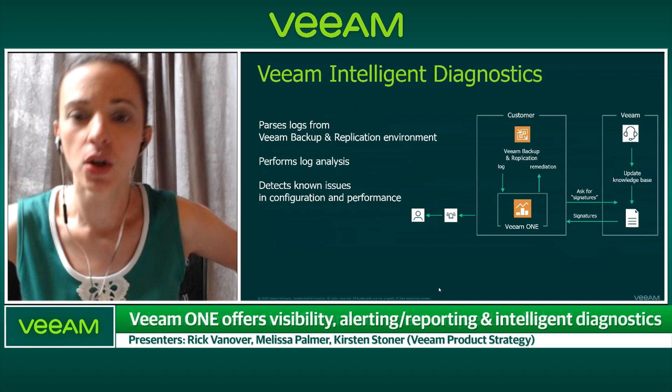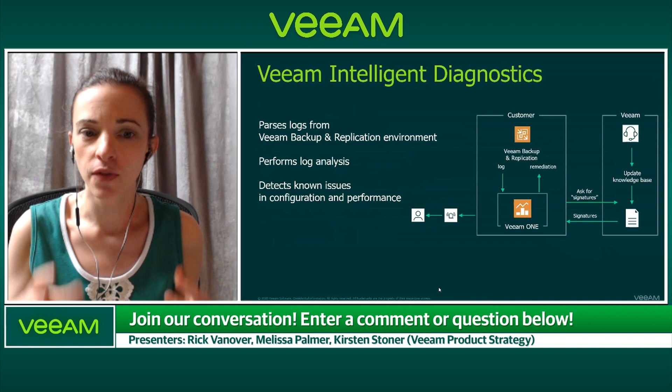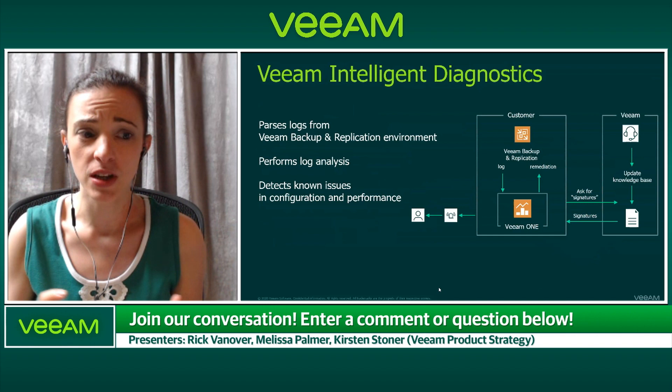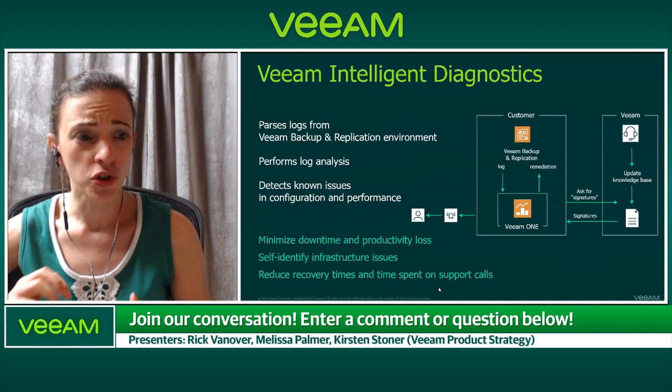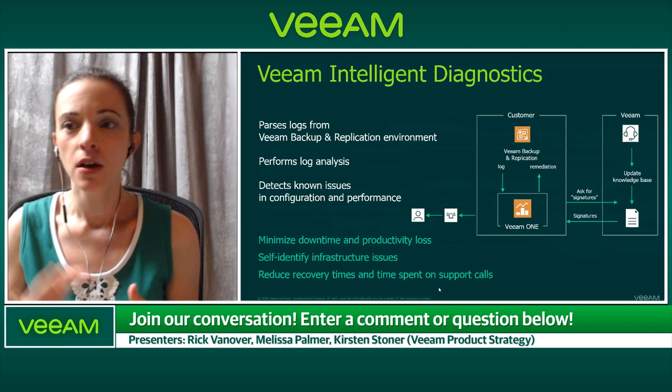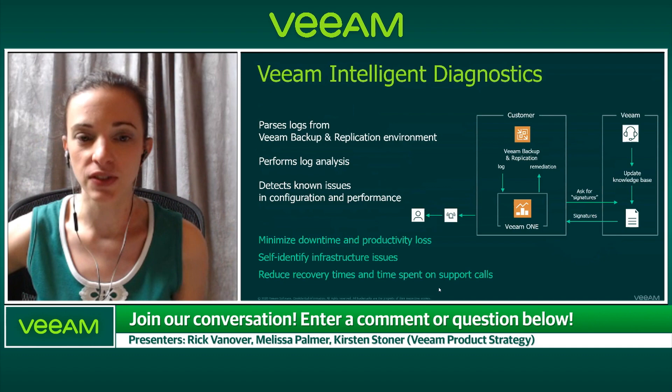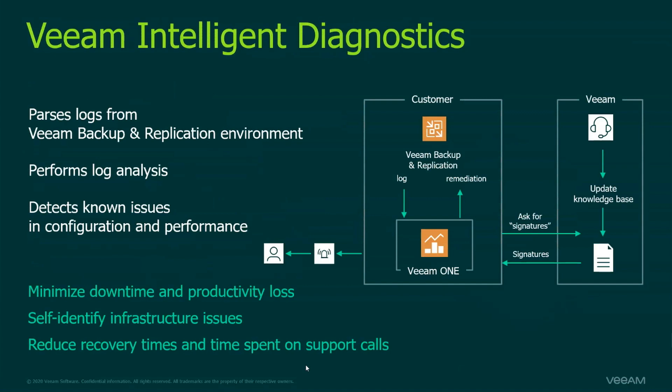A lot of technology vendors have different systems that call home, and a lot of customers don't turn that on because you don't want your data being sent to who knows what data center. This is a pull technology. Veeam Intelligent Diagnostics will download signatures from Veeam automatically. You can go right into Veeam One and say update now, or if you have an air-gapped system, you can manually download those signatures and upload them to your Veeam One server.